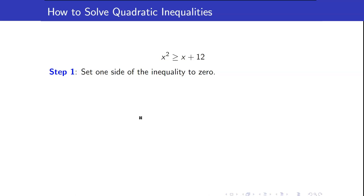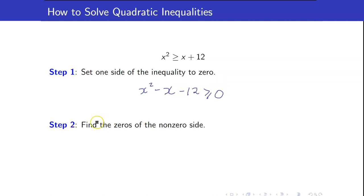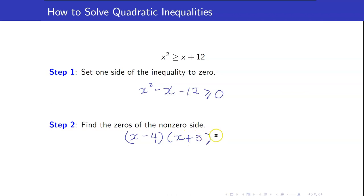Here are the steps to solve quadratic inequalities. The first step is to set one side of the inequality to zero. For example, in this case we will set one side to zero: x squared minus x minus 12 is greater than or equal to zero. The second step is to find the zeros of the non-zero side. The non-zero side in this case is factorable — it can be factored as (x minus 4)(x plus 3) greater than or equal to zero.